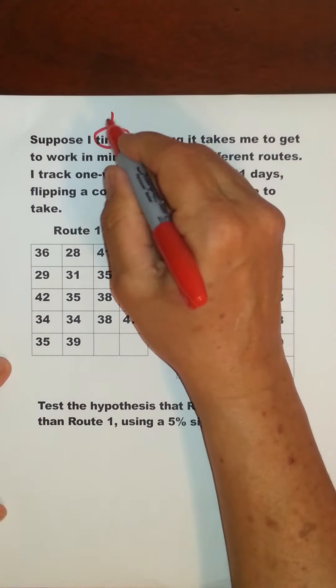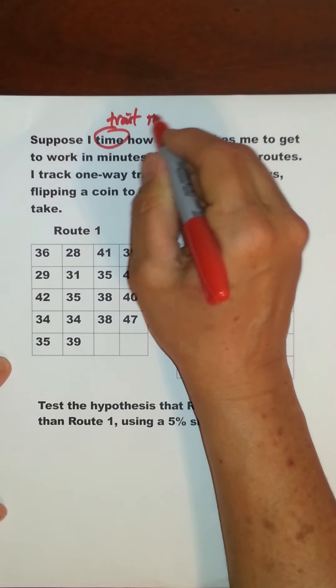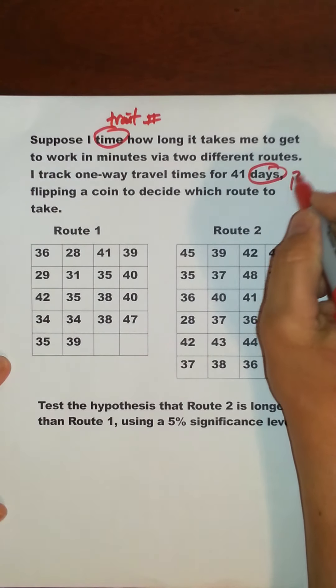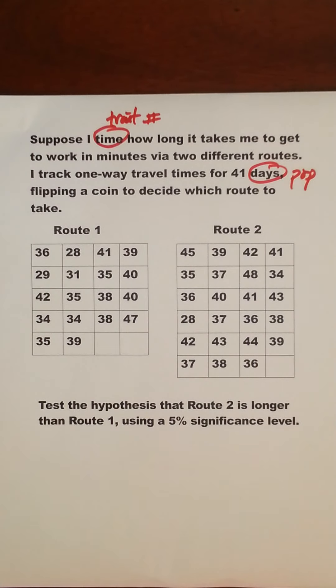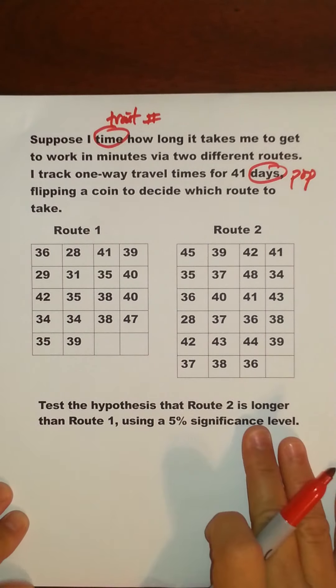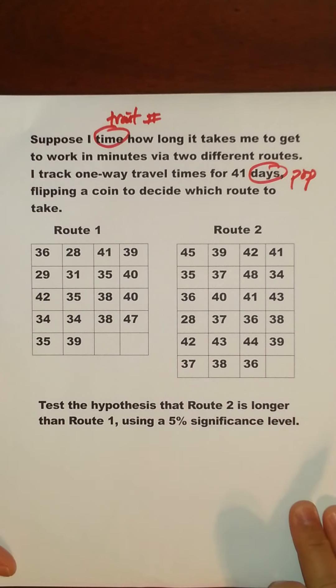So again, time was our trait, it's a numerical trait, days, population. And we're going to test the hypothesis that Route 2 is longer than Route 1 using a 5% significance level.